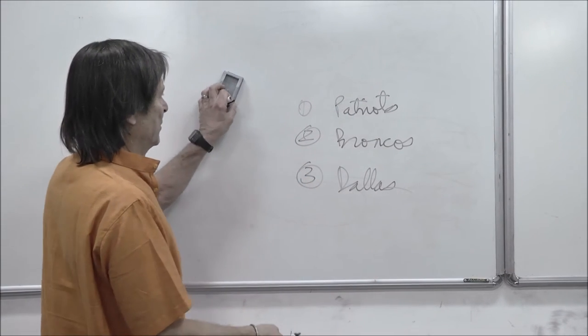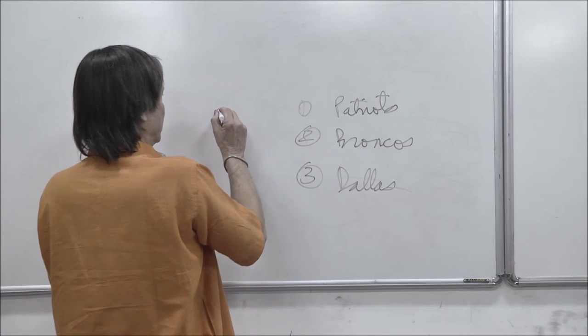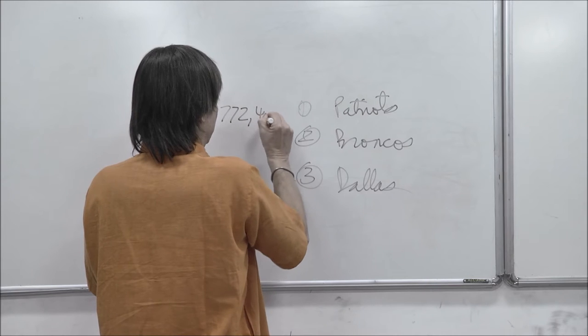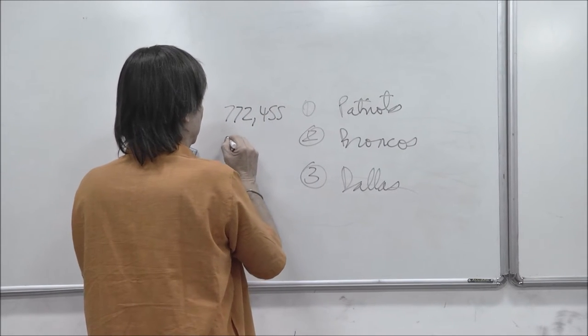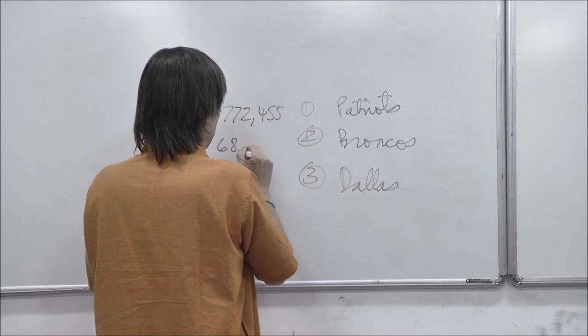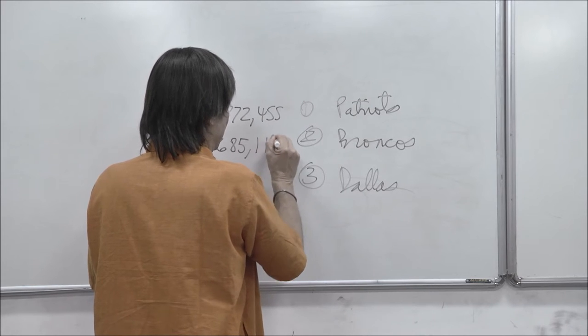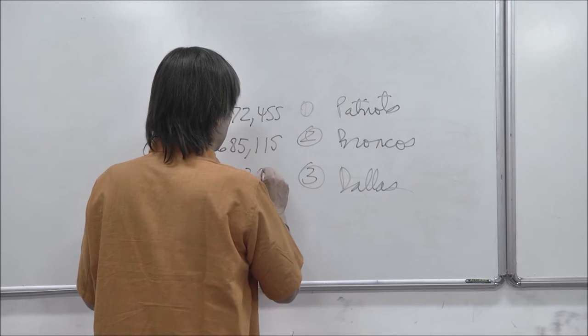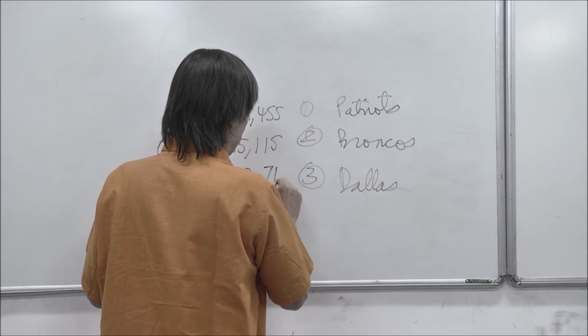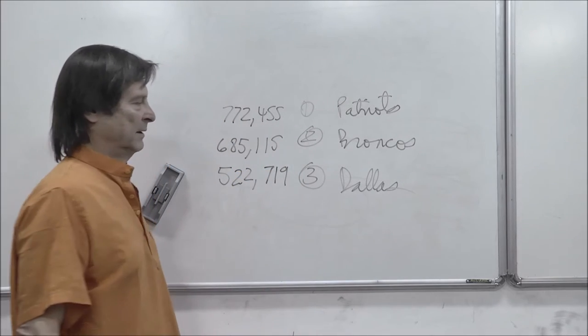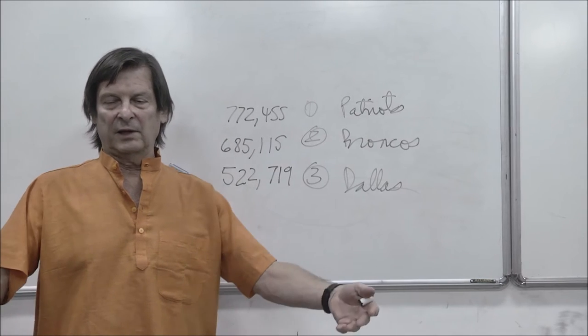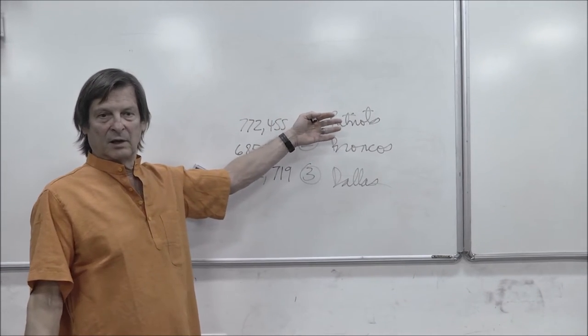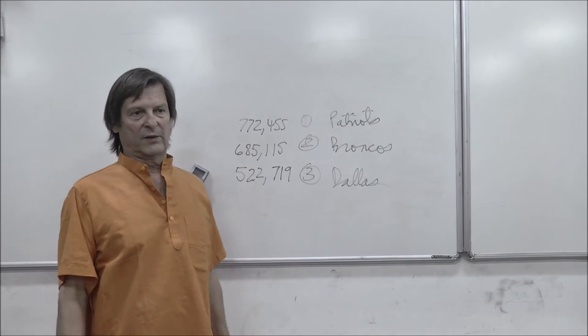And they'll have a number. And they'll say, oh look, the Patriots had 772,455 people call in, and Broncos was 685,115, and Dallas was only 522,719. And so USA Today, the next day, will conclude that the Patriots are seen as America's favorite or best team.